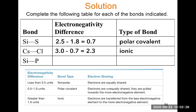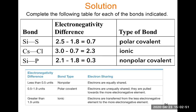For silicon and phosphorus: silicon has a value of 1.8 and phosphorus is 2.1. Doing 2.1 minus 1.8 gives a difference of 0.3. Since 0.3 is less than 0.5, this is a non-polar covalent bond. The silicon-phosphorus bond is non-polar.